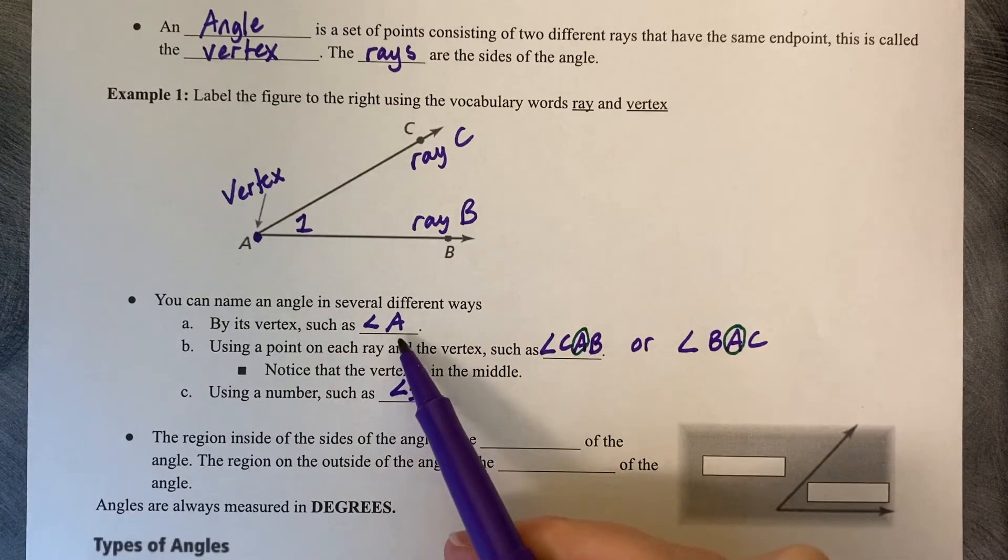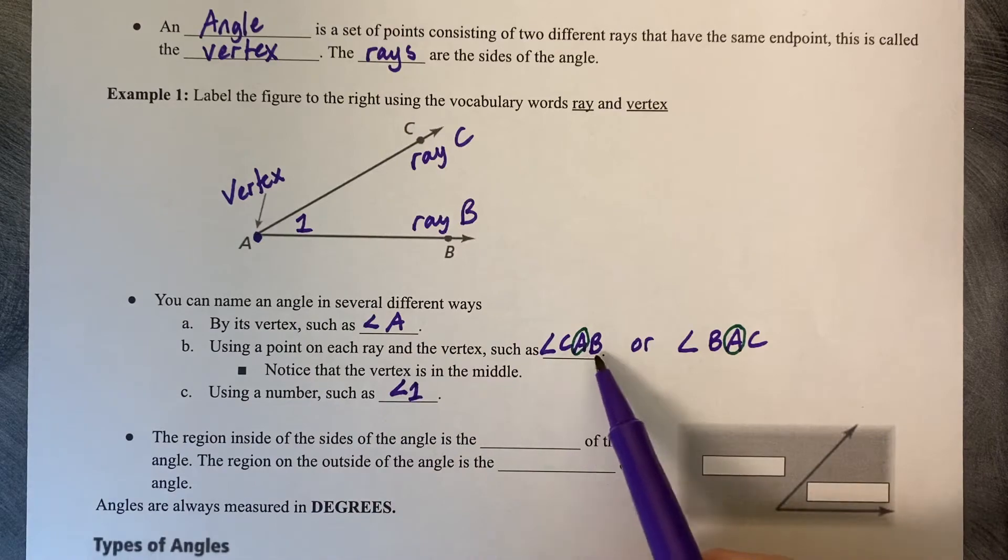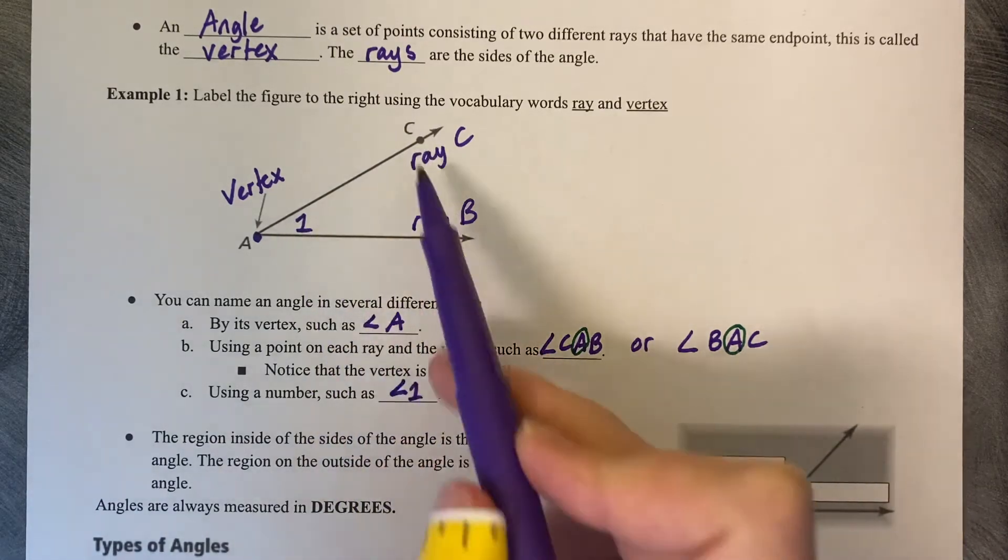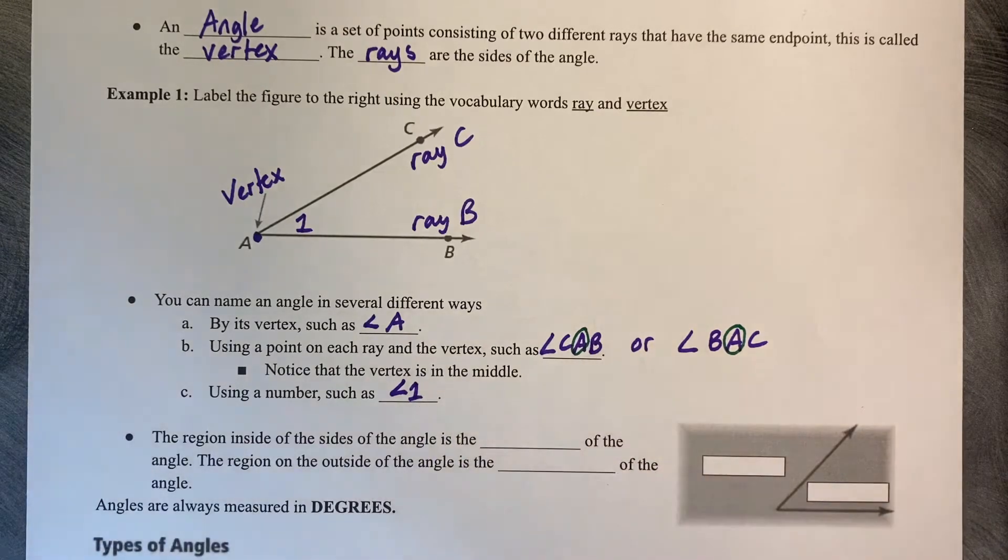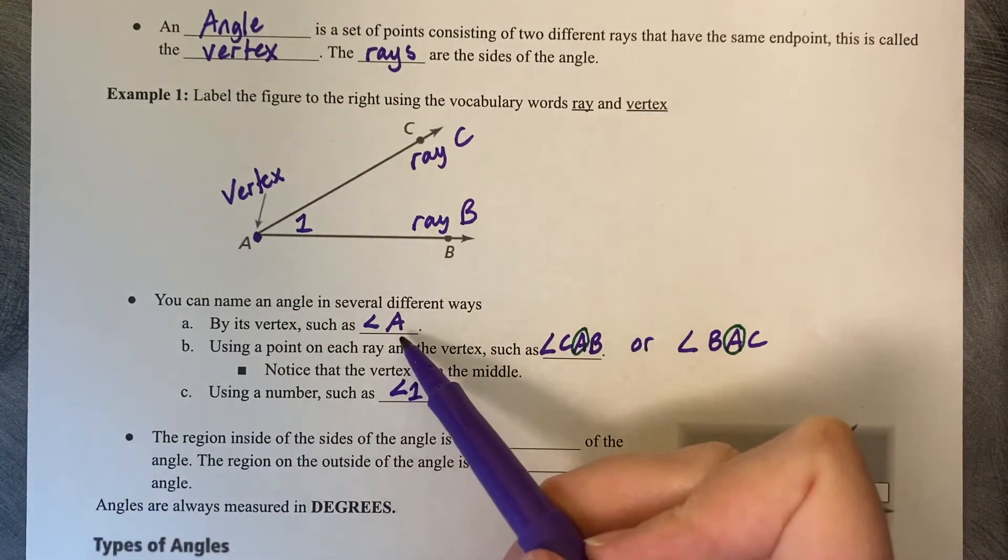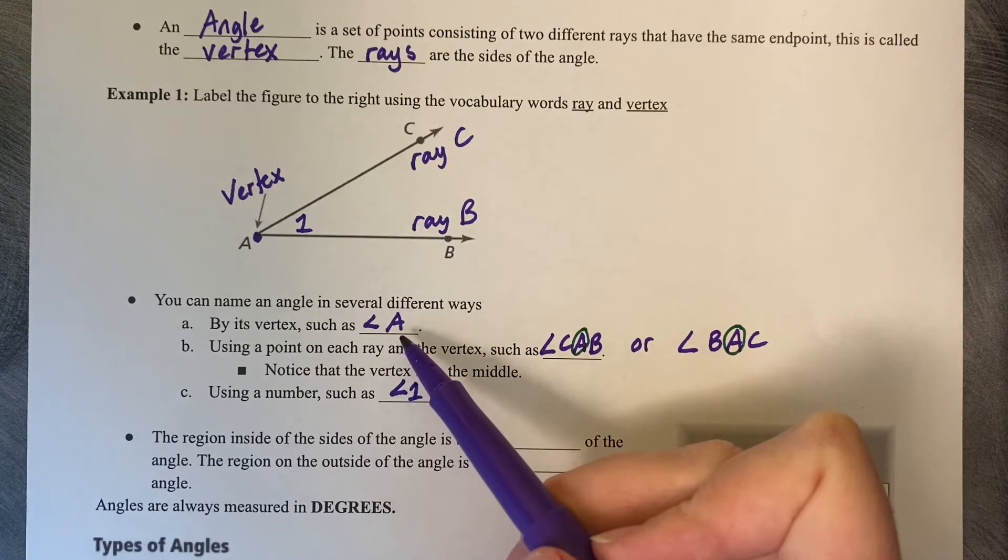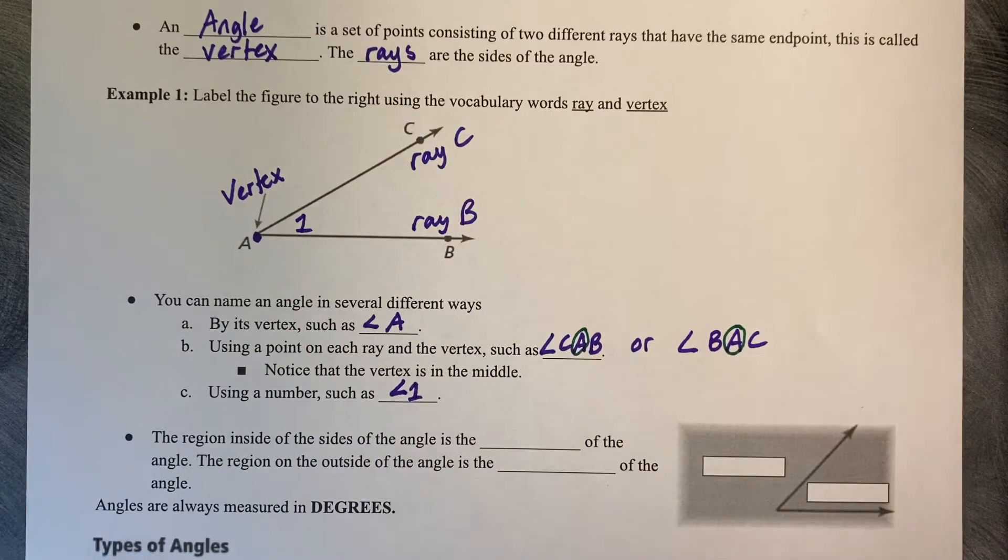So you can either do it by its vertex, you can do it by its two points on the opposite rays with the vertex in the middle, or it can be done by a number. You cannot call an angle by its vertex if there are two angles sitting next to each other. You can only use this if it's a single angle sitting by itself.